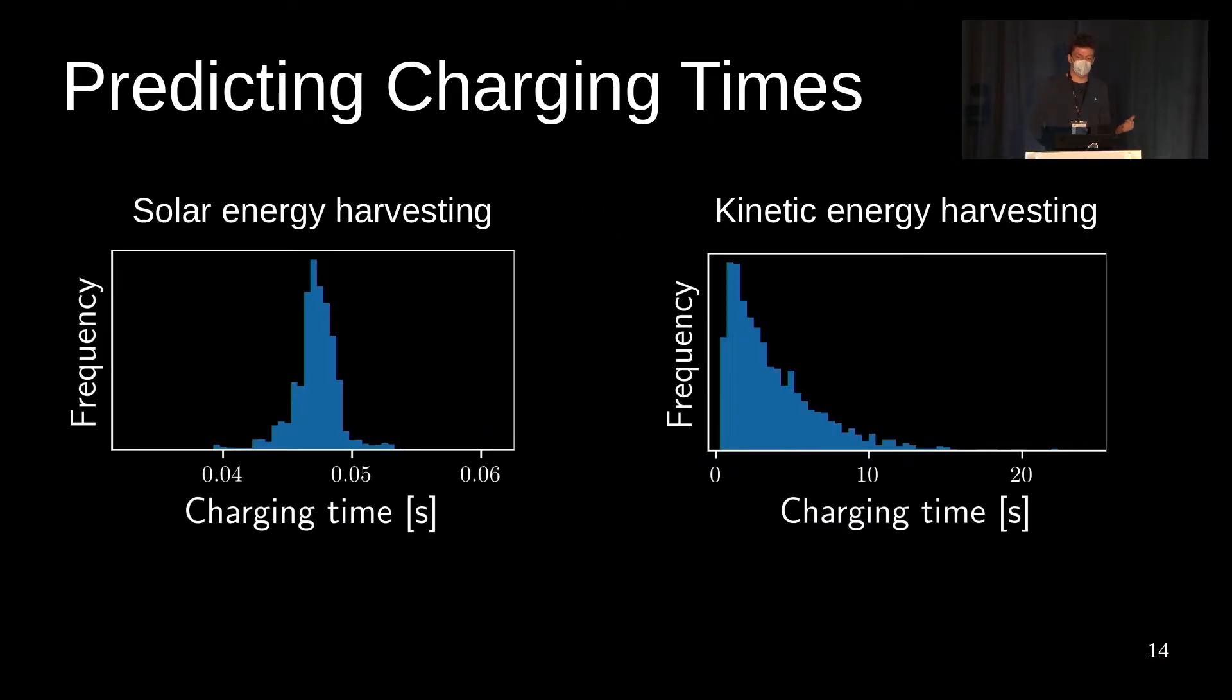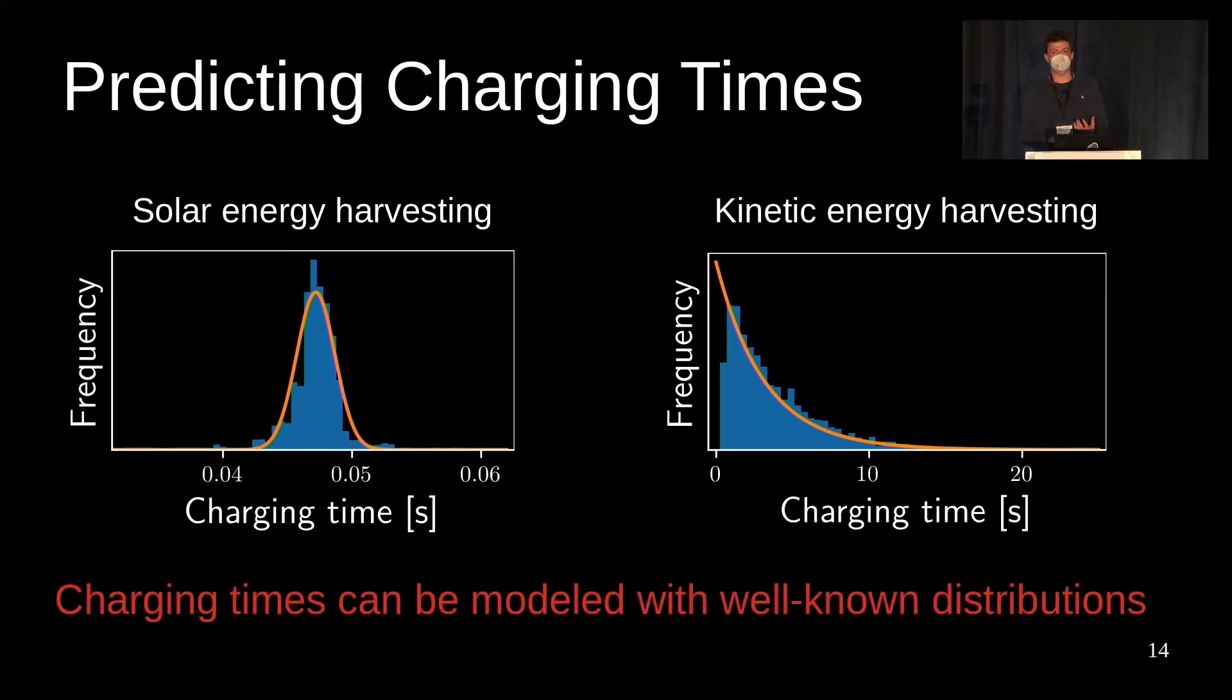However, if we look at the histograms instead, we immediately recognize some patterns. Here on the left you see the distribution of charging times from a solar harvesting node, and on the right the charging times of a kinetic harvesting node. The charging times on the left are distributed around a fixed mean that resembles roughly a normal distribution. The charging times on the right instead follow an exponential distribution. This motivates a probabilistic approach where we don't try to predict exactly the next charging time, but rather in a statistical sense by learning the parameters of well-known distributions.